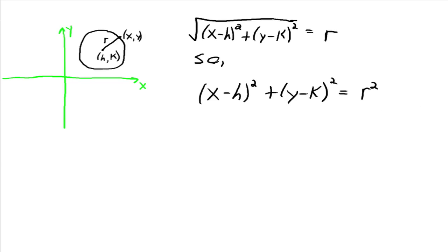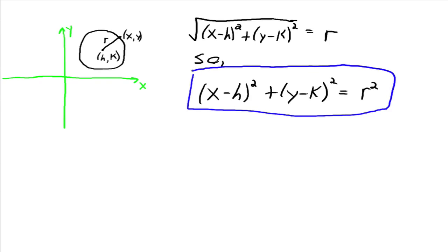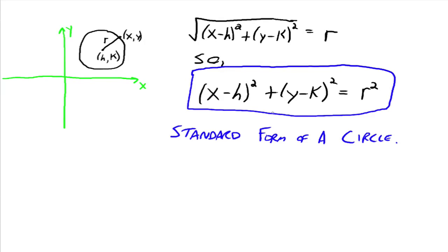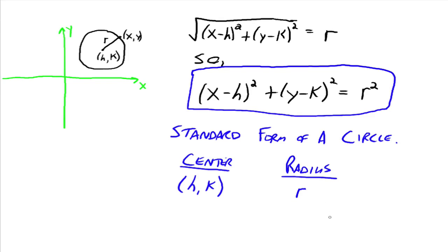And this is what we need to know — this is called the standard form of a circle. In this form, if we have an equation in this form, we know it's a circle, we know the center is h comma k, and we know the radius is r. So this is the quick little derivation of our formula, our standard form for a circle.